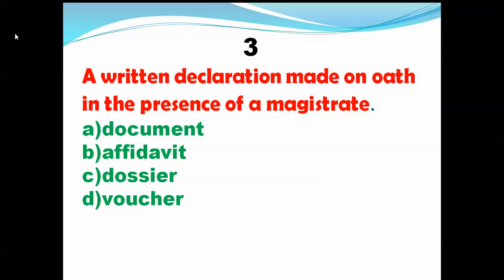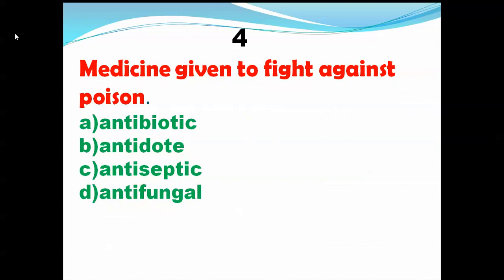Next question: what is the medicine given to fight against poison? Someone has been affected by some poison, and the poison is spreading — something should be given to counter it. That is called antidote. Antidote means something which will counter the poison — it works against the poison. So antidote is the right choice: medicine given to fight against poison.